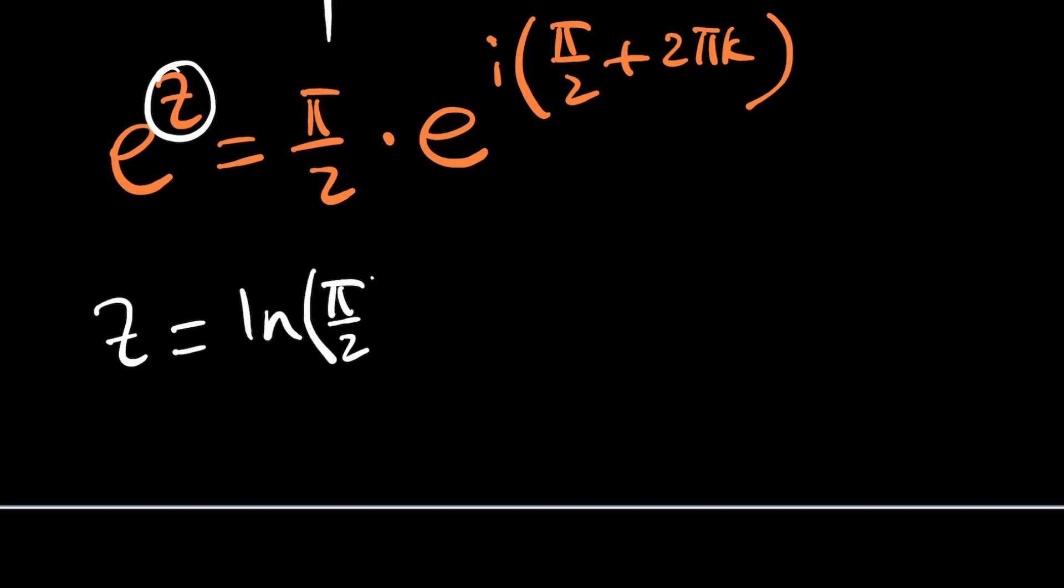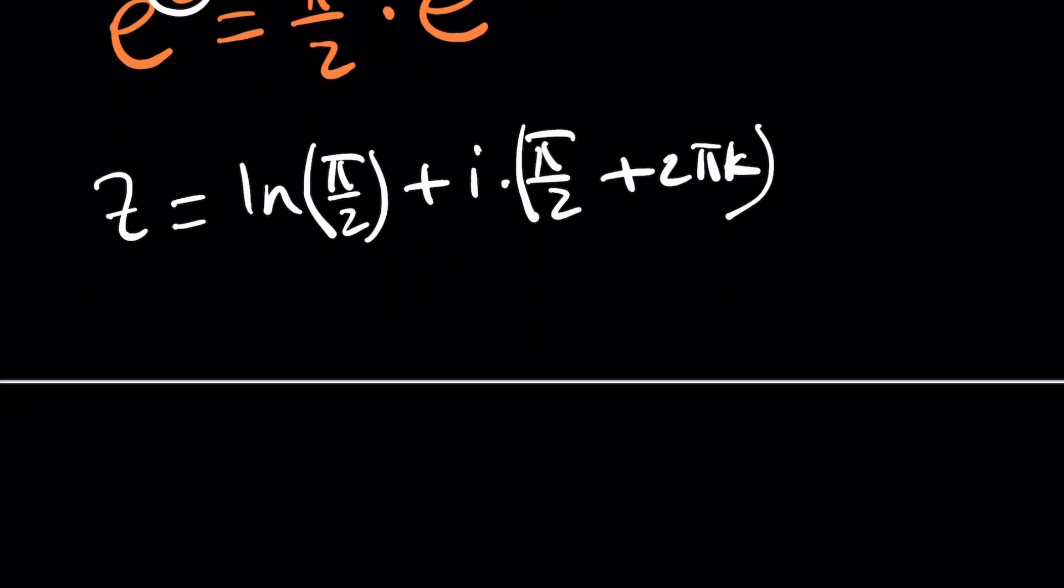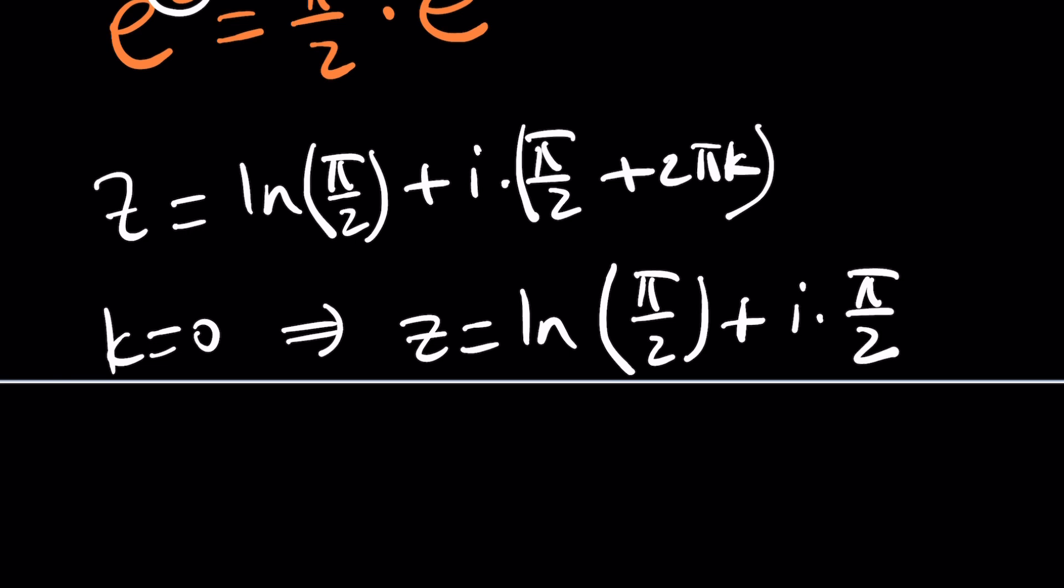And again, for simplicity's sake, or just wanted to keep it a little simpler, you can assume k equals 0. At least that gives you one of the solutions. You're going to get ln(π/2) plus i times π over 2.